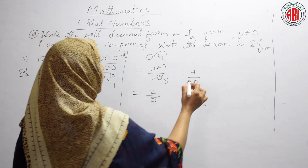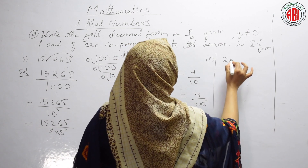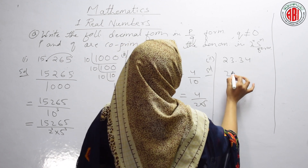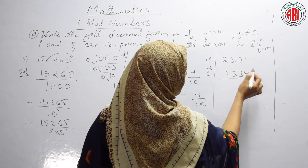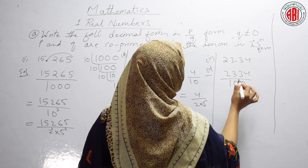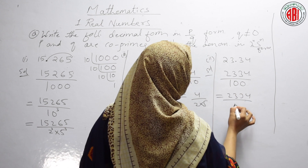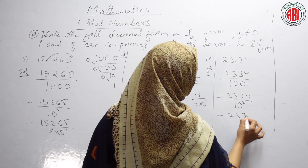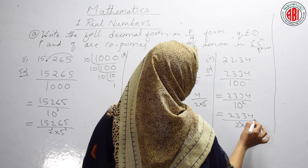The next one is 23.34. We have to convert 23.34 to P/Q form. The point shifts after the last digit. How many zeros do you have to add? Two zeros — so we get 2334/100, which equals 2334/10². We can simplify 10² as (2 × 5)² = 2² × 5².